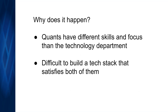Another reason, related to the different skill sets: quants and the technology department tend to optimize for different things. Quants want to optimize for flexibility — they want to experiment with lots of different ideas until they find one that works. Whereas the technology team is responsible for running a really complex production machine that has to perform to exacting standards, so they're generally optimizing for reliability and performance. Those are pretty different optimizations, so it's not really surprising that it's difficult to make everyone happy with one platform.